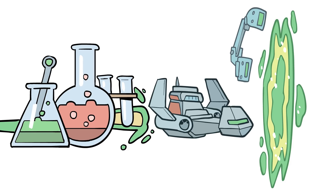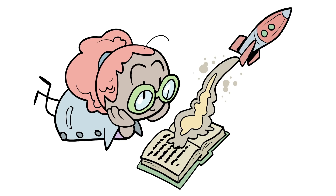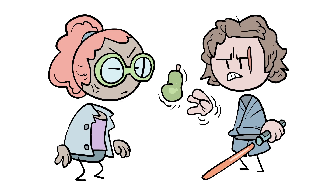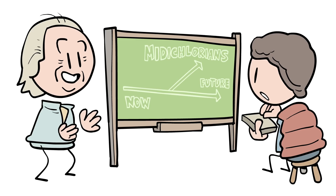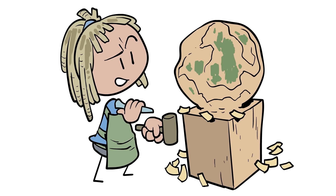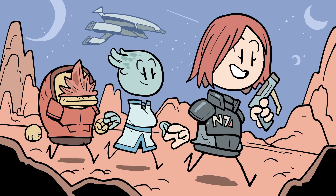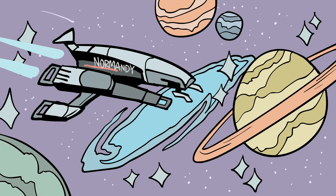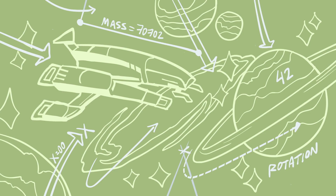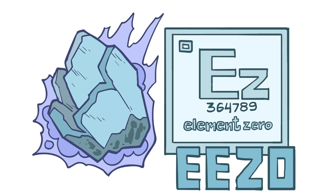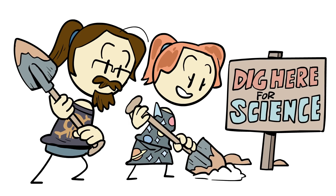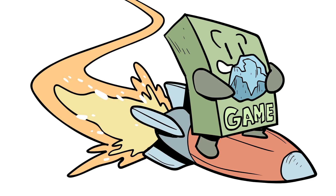Science fiction stories, by the nature of their namesake, fall somewhere on the spectrum between science and fiction. Which means scientists that are also sci-fi fans have to learn to let a lot of stuff slide, scientifically speaking. And sometimes stories can get themselves into trouble when they try to explain too much — especially when building an expansive world like the Mass Effect trilogy. Let's take, for example, Element Zero, or Ezo for short, a fictional element unique to the Mass Effect universe.